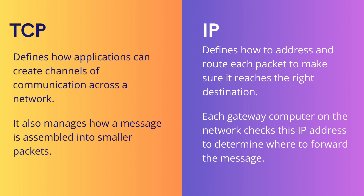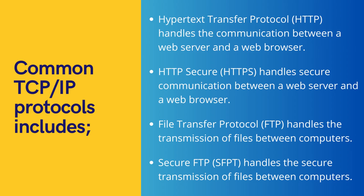Each gateway computer on the network checks the IP address to determine where to forward the message. TCP and IP in combination achieve the duties specified in the seven layers of the OSI model that we learned in the previous video. Over the decades, TCP/IP has defined a set of common protocols for different categories of application.